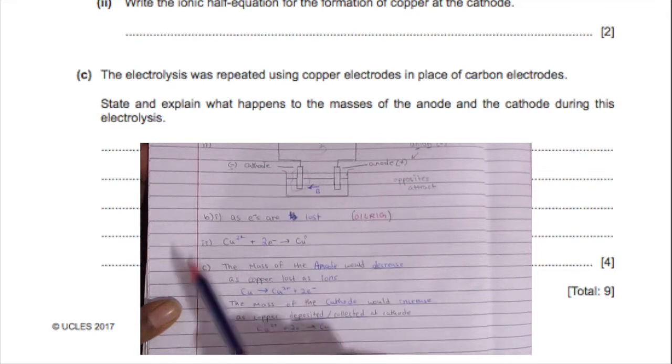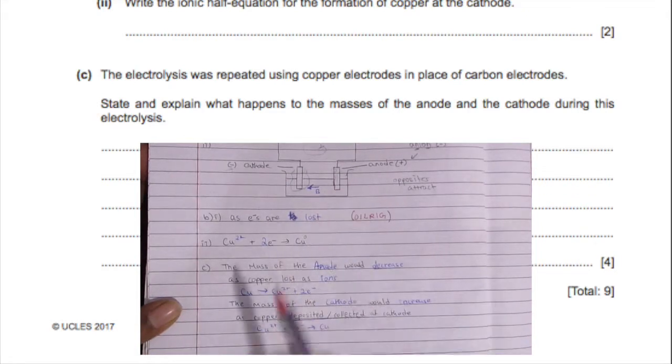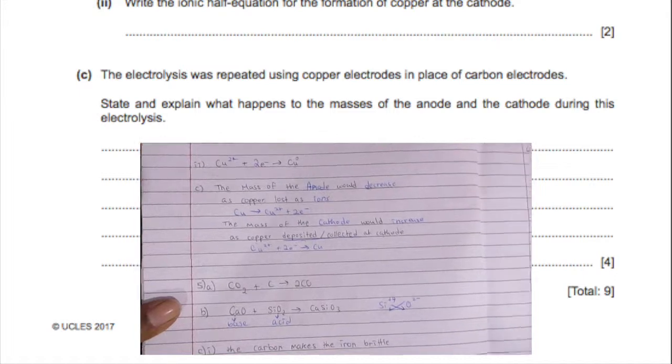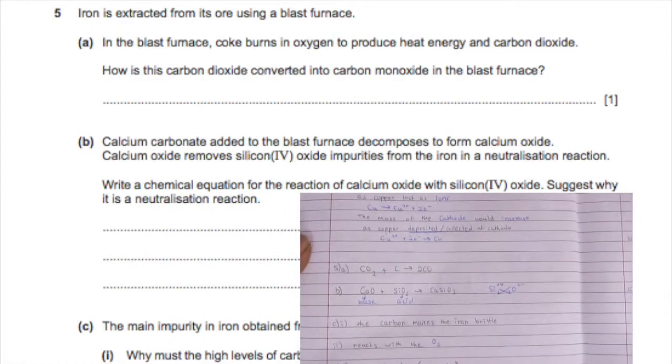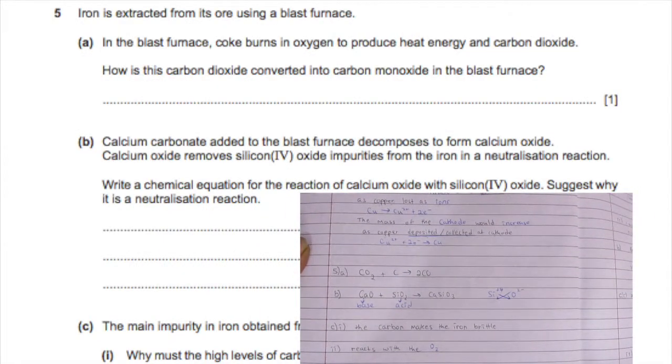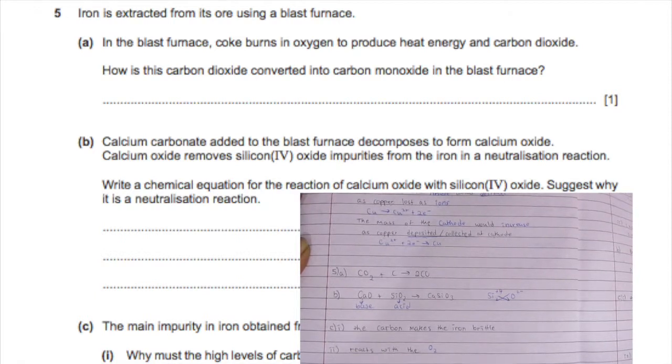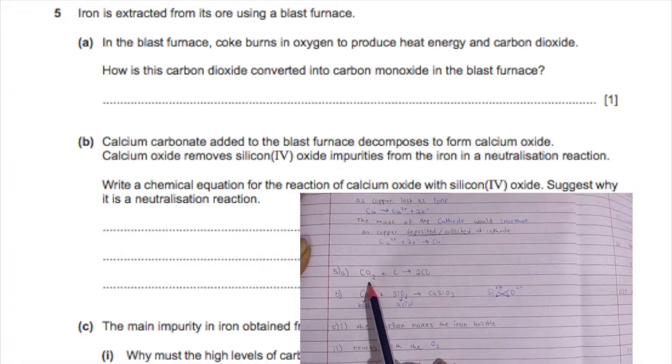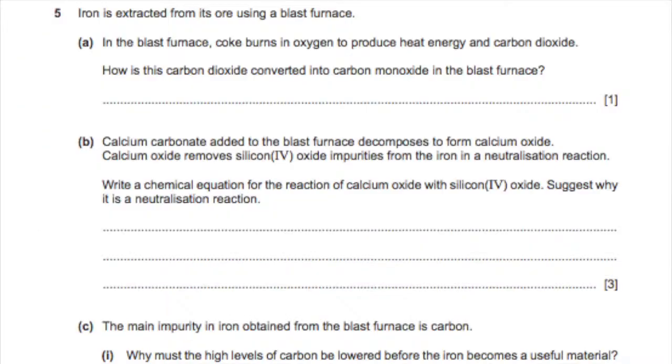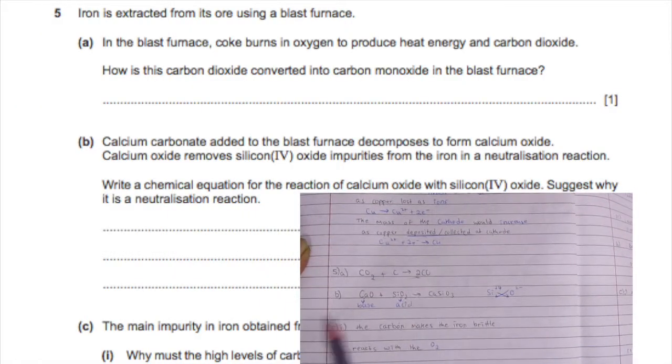Obviously, and then that would mean that the mass of the cathode would increase because the copper is deposited there or it's collected there, and you can see through the equations that's what happens. So then for question five, they're asking us how carbon dioxide is converted to carbon monoxide in the blast furnace. It reacts with coke, which is carbon, to give you two molecules of carbon monoxide.